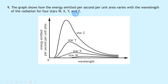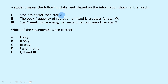Question 9 shows a graph of energy emitted per second per unit area against wavelength for four stars W, X, Y and Z — blackbody radiation curves. A student makes three statements: Statement 1 — star Z is hotter than star W. Statement 2 — the peak frequency of radiation emitted is greatest for star W. Statement 3 — star Y emits more energy per second per unit area than star X.